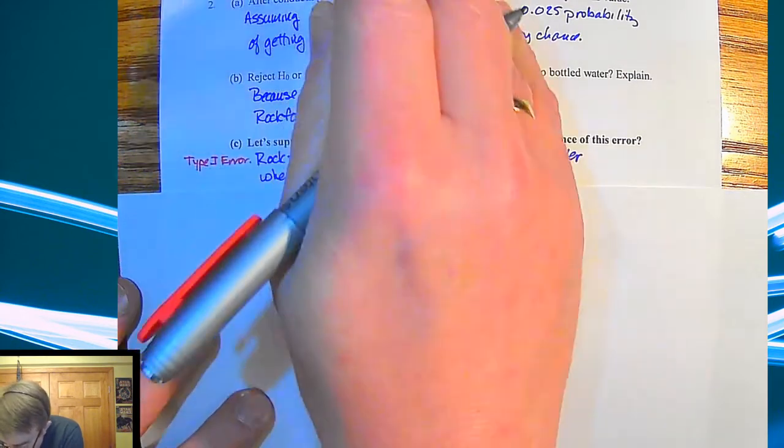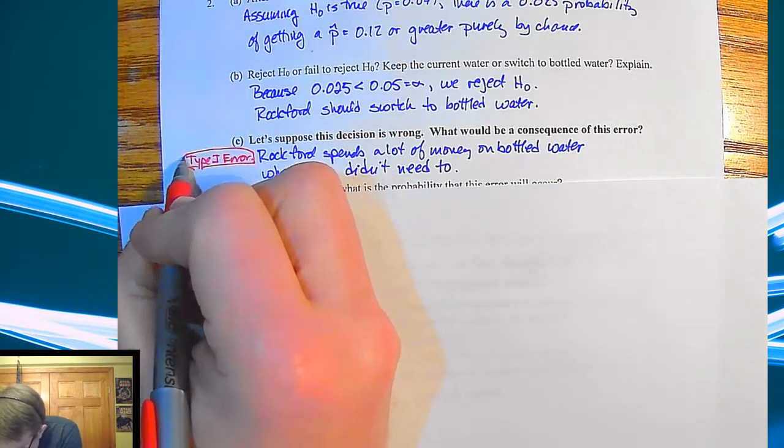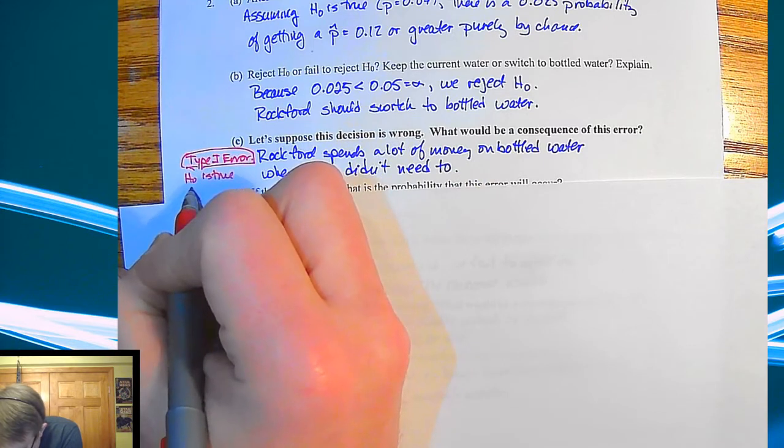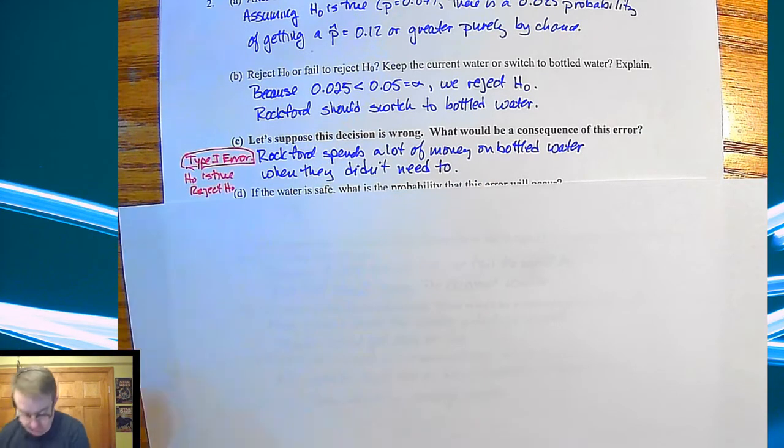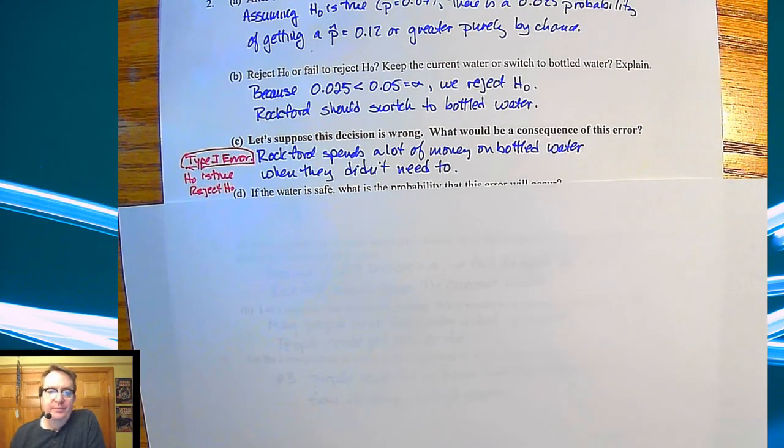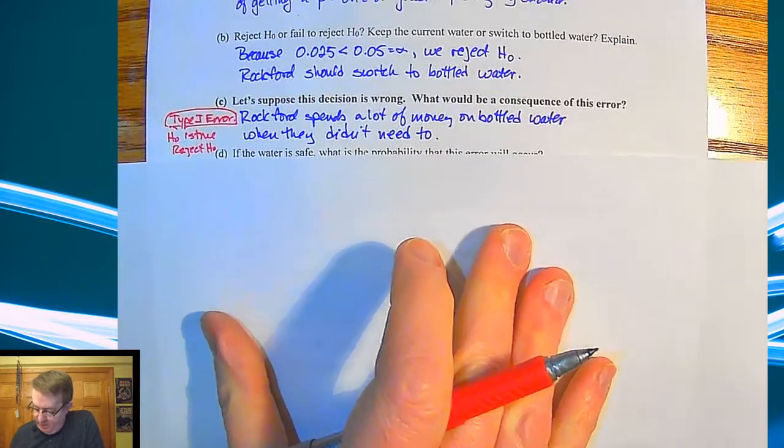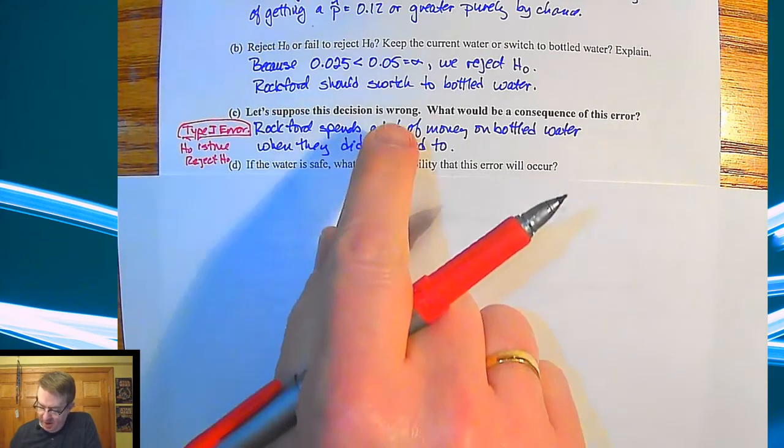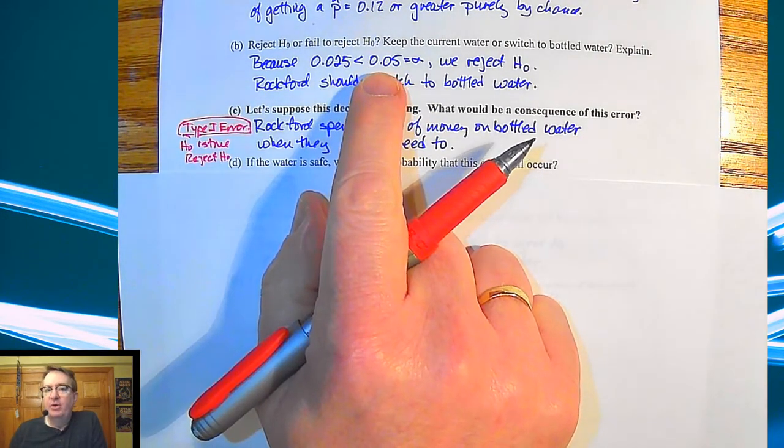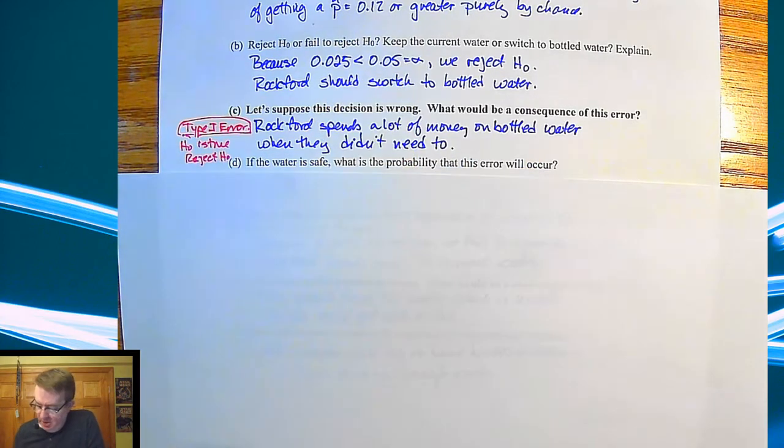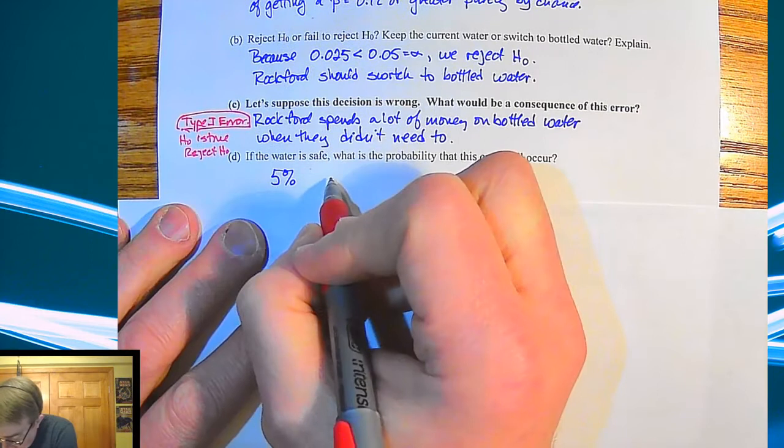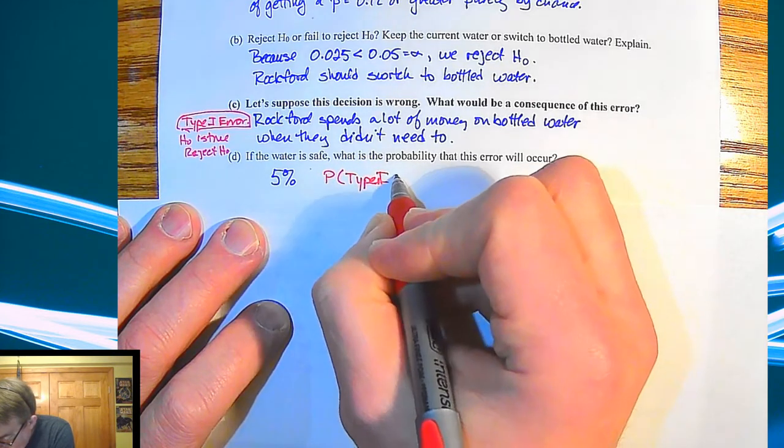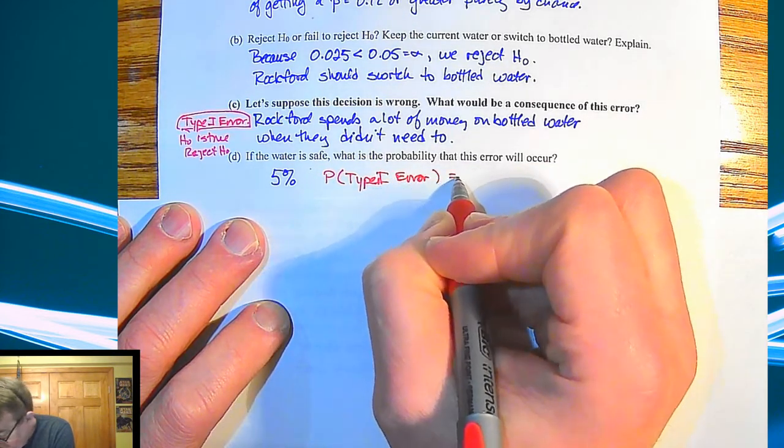Okay, and what ends up happening there is the null hypothesis is true, but we end up rejecting that null hypothesis. Now, if the water is safe, what's the probability this error will occur? Well, this is something that we set. What did we set? Our limit here is 5%. We said anything under 5% we're going to take as evidence saying that what we're seeing is wrong. And so that's actually, it's your alpha value. The probability of getting a type 1 error is equal to alpha.